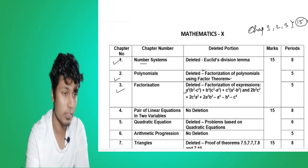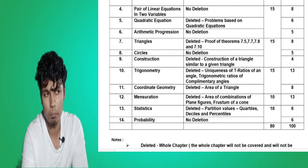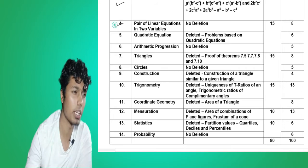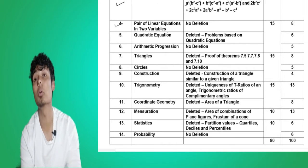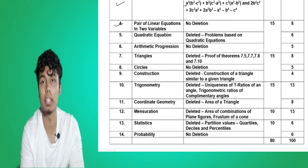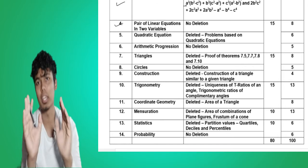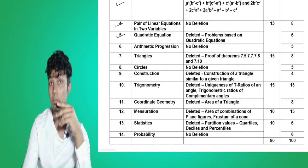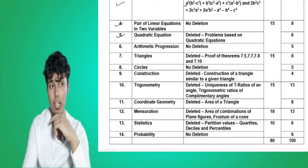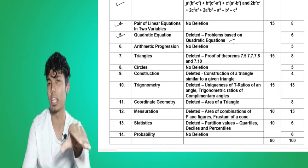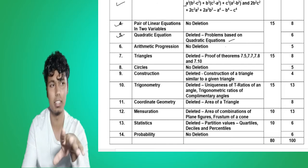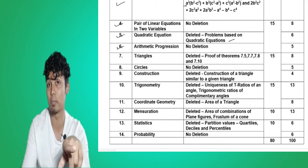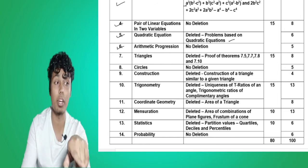Now let us go down. Chapter number four is Pair of Linear Equations in Two Variables — from this chapter there is no deletion, no portion is deleted. Chapter number five: Quadratic Equations — problems based on quadratic equations, some questions which are based on quadratic equations, all those are deleted. Chapter number six: Arithmetic Progression — from this chapter no deletion is there.